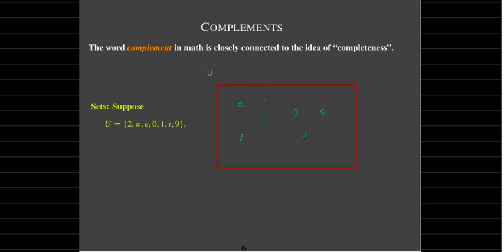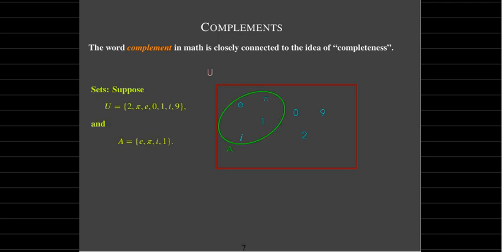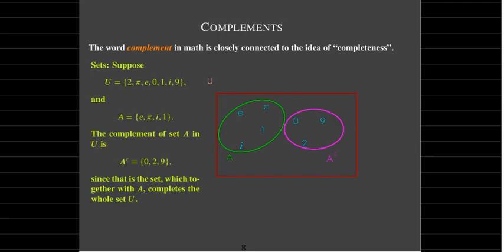We also use the word complement when dealing with sets. Suppose our set U has seven numbers in it: 2, pi, E, 0, 1, i, and 9. We take a subset A with the numbers E, pi, 1, 1, and i. The complement of A would be the set {0, 2, 9} — the complement of A is what's needed from U to complete A to make all of U.